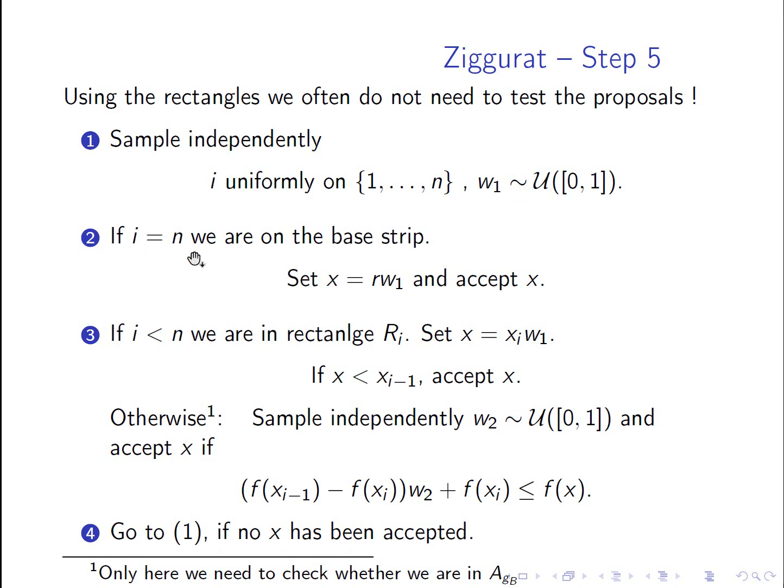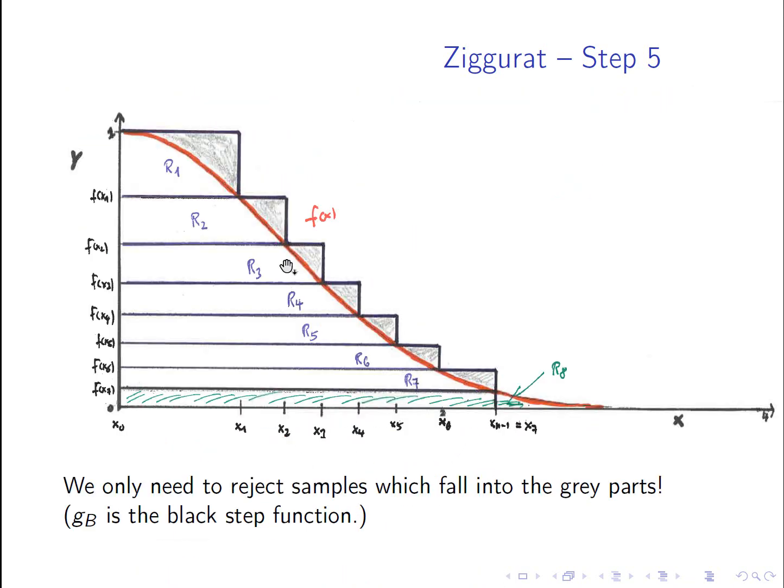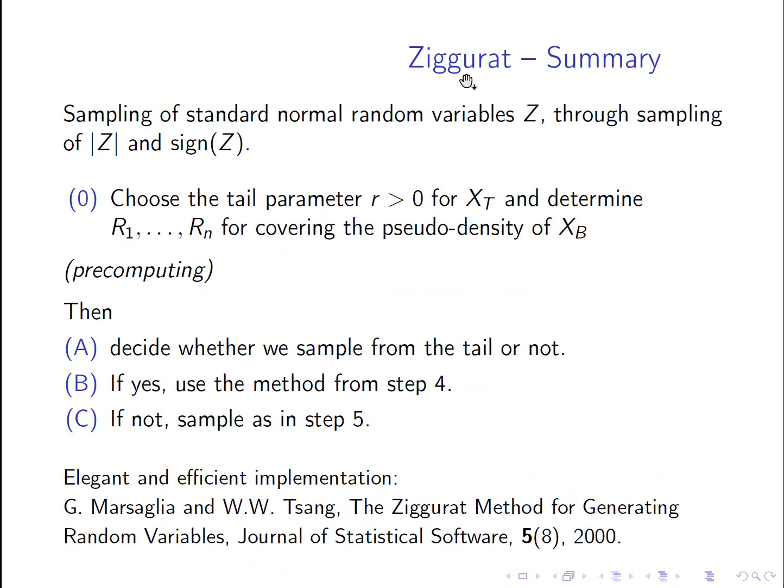So sample the rectangle we are in. If we are on the base strip, we can just do this and accept X. If we are on rectangle RI, well, we can accept if we know that the X coordinate is less than Xi minus 1. And otherwise, we have to do this test. And as I said, we only reject in the grey parts. Okay. So let's summarize everything. So what we are doing in this Ziggurat method is we are sampling a standard normal random variable. So sampling of its absolute value and its sign. And we have these four steps here. And step 0 is a pre-computing step. So where we choose the tail parameter for the tail variable. And we determine the sets for covering the pseudo density of XB. So R1 up to Rn minus 1 are the rectangles. And Rn is the base strip. And this is really done by pre-computing. It can be done offline before. And then the values are just saved.